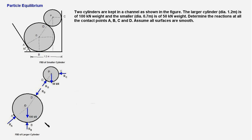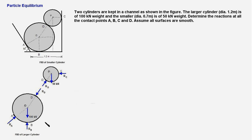The larger cylinder has the reaction force at point B pointing upwards due to the base of the channel. The weight of 100 kN acts at the center of the larger cylinder, and the reaction force due to the inclined surface of the channel acts at point A. It is normal to the surface and therefore passes through the center O. So the FBD is complete — all the forces acting on each of the cylinders have been rightly shown.